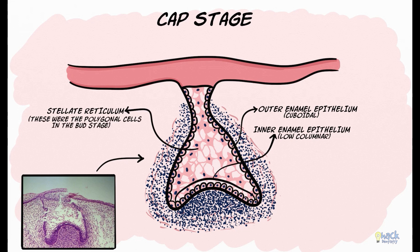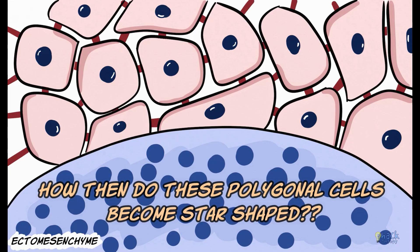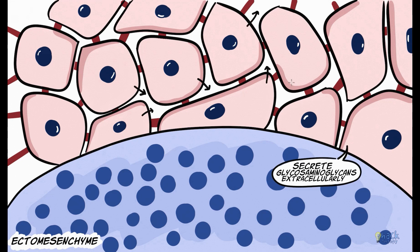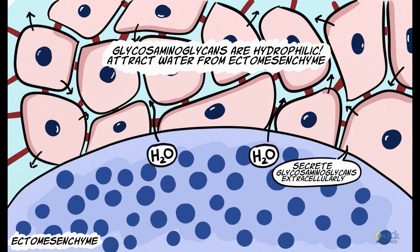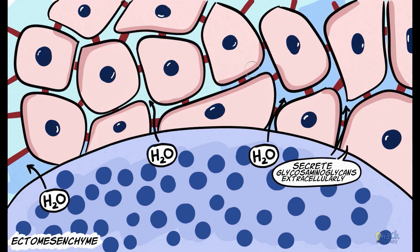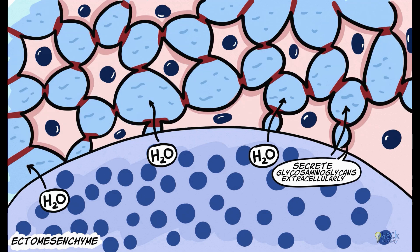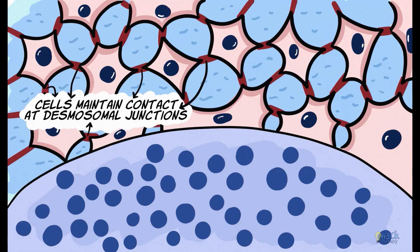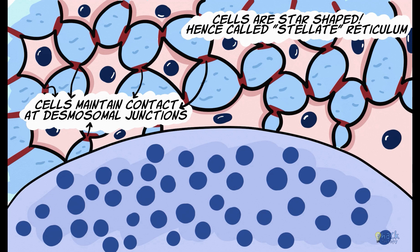These stellate reticulum cells were the polygonal-shaped cells which filled the enamel organ during the bud stage. These polygonal cells synthesize and secrete glycosaminoglycans into the extracellular compartment between the cells. Glycosaminoglycans are hydrophilic and hence attract water from the adjacent ectomesenchyme into the enamel organ. When fluid starts filling the extracellular compartment, the central polygonal cells start to separate and are pushed apart. However, these cells maintain contact with each other at the desmosomal junctions, and this gives them a star-shaped appearance. They are thus called stellate reticulum.